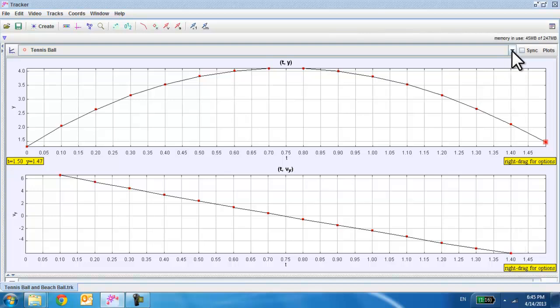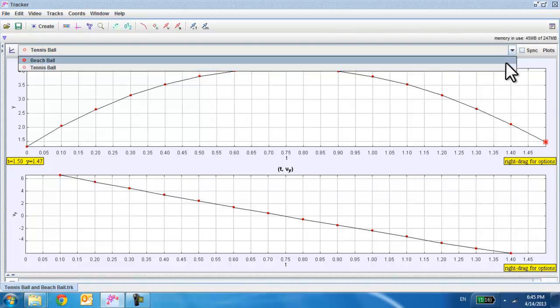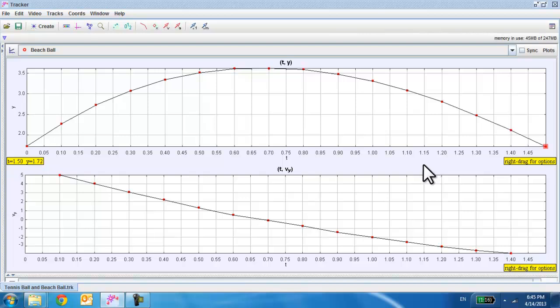Now let's look at the graphs for the beach ball. Aha! The displacement-time graph for the beach ball is clearly not symmetrical. This is the point where it reaches the maximum height. And you see that it takes about 0.7 seconds for the beach ball to rise to the top, but it takes about 0.8 seconds for it to fall back down.